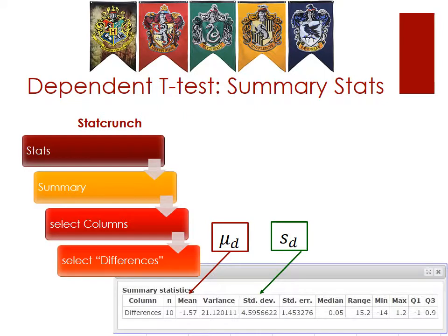Hopefully this brief tutorial helps you understand how to take raw data points and calculate the specific mu of d and s of d that you would use manually for your computations.